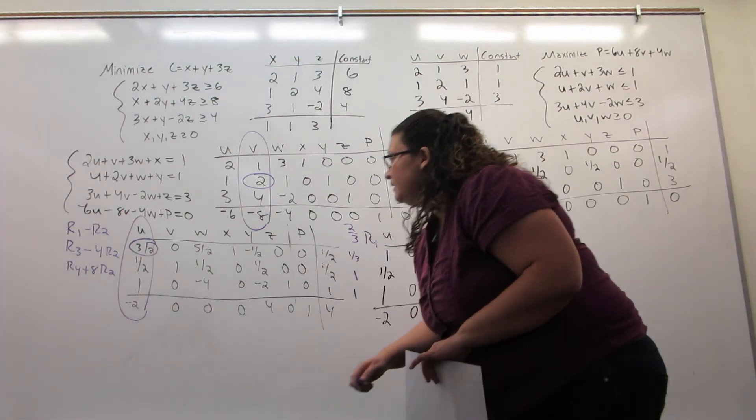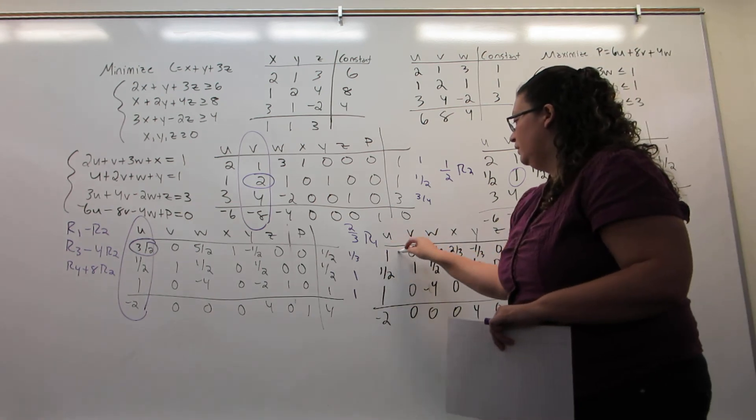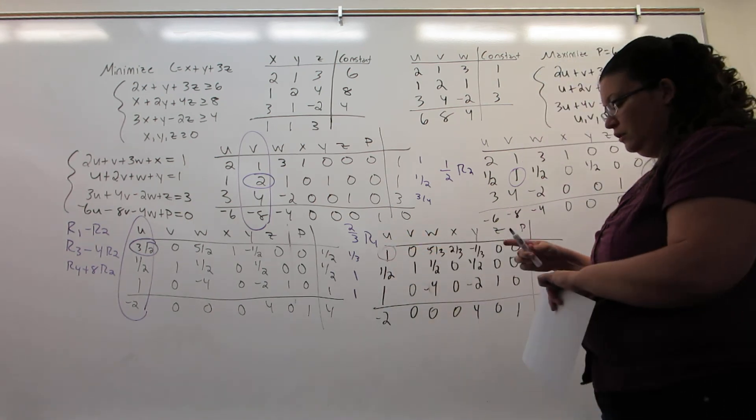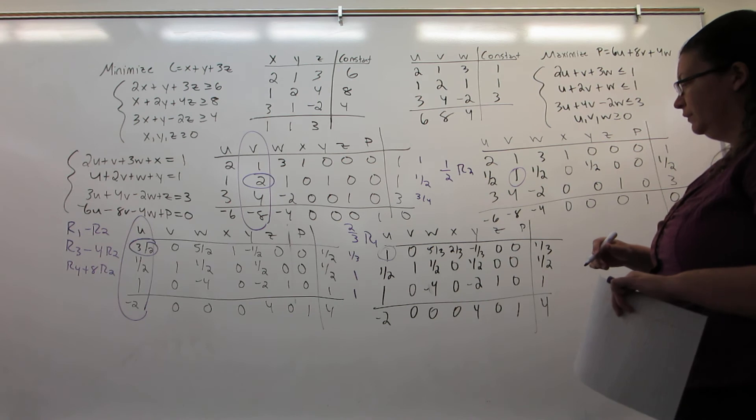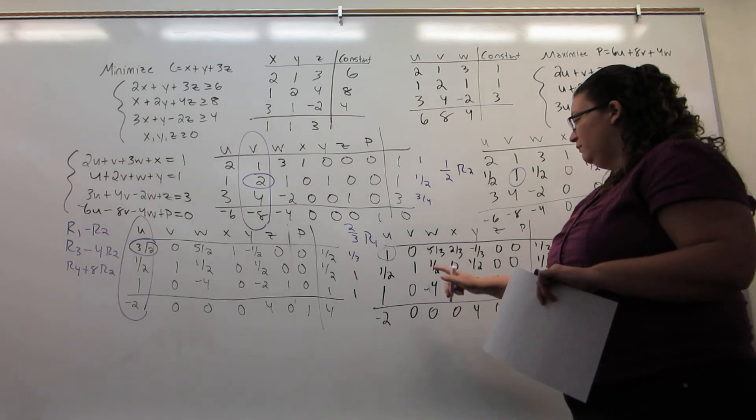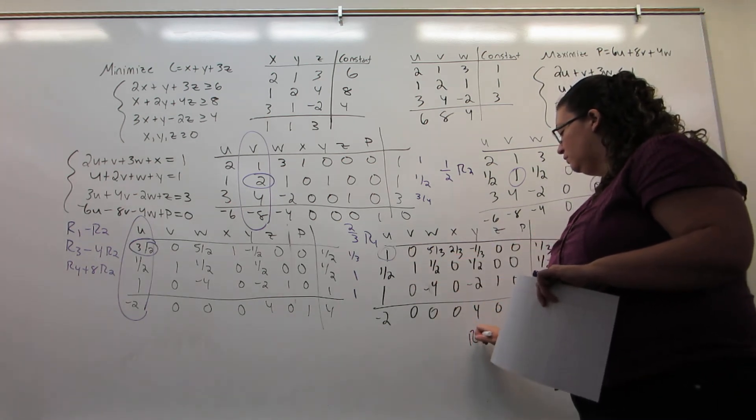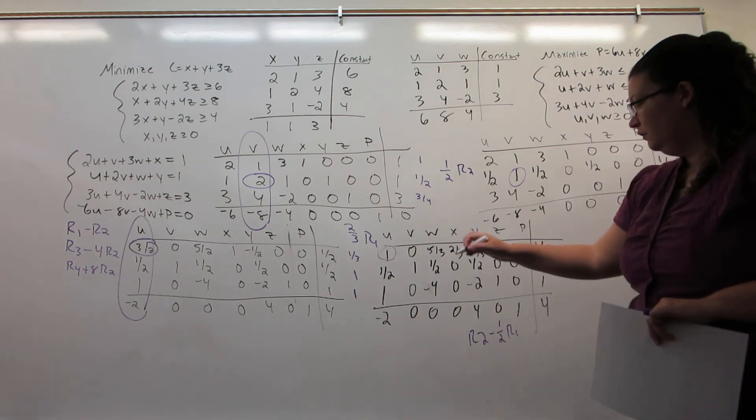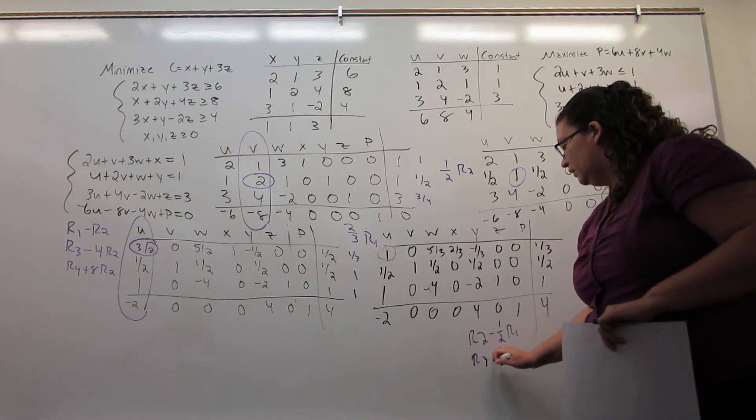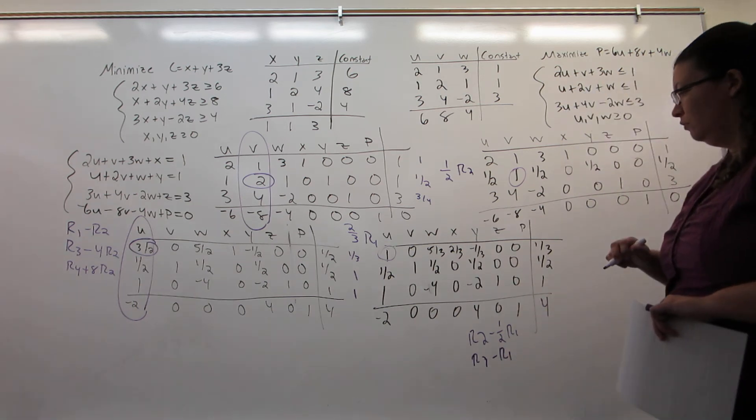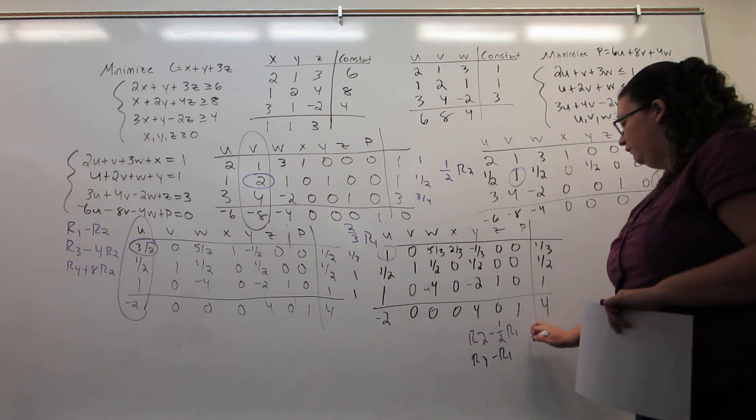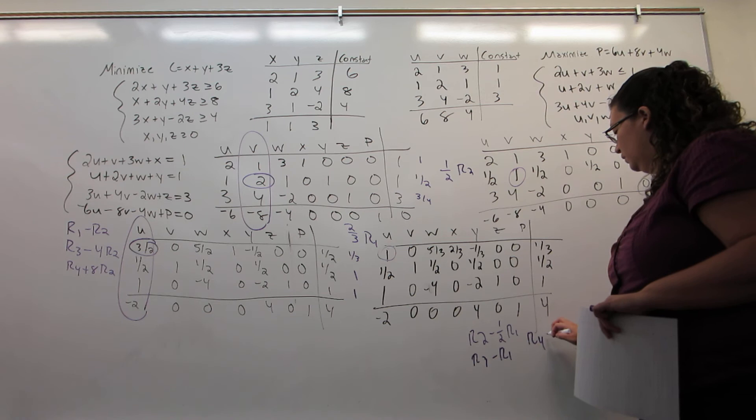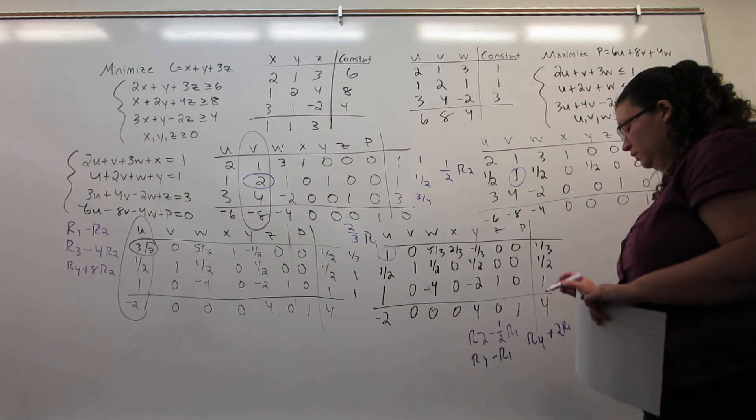Our last step is using our pivot position, which is right here, to clear out the rest of the column. So I'm going to be fixing R2 by doing R2 minus one-half R1. I'll fix R3 by doing R3 minus R1. And I'll fix R4 by doing R4 plus twice R1.